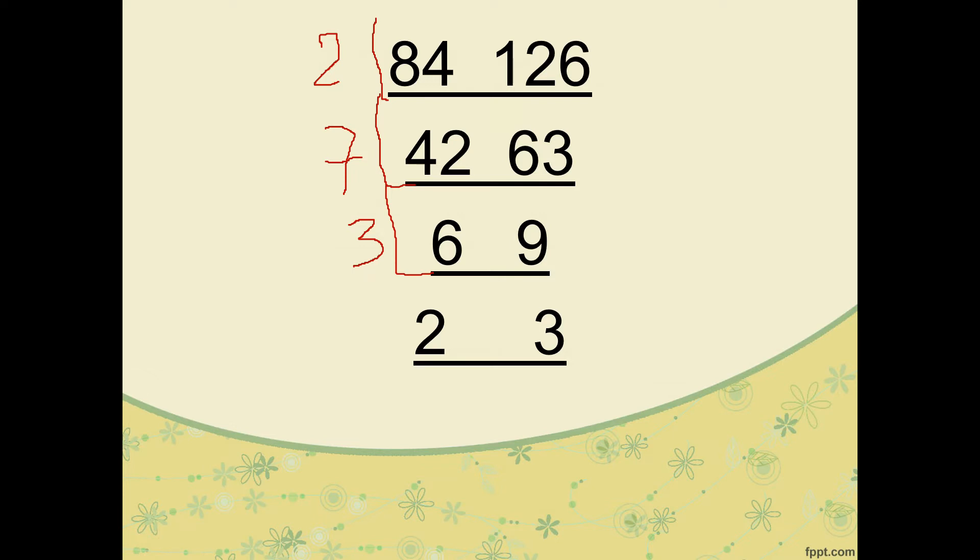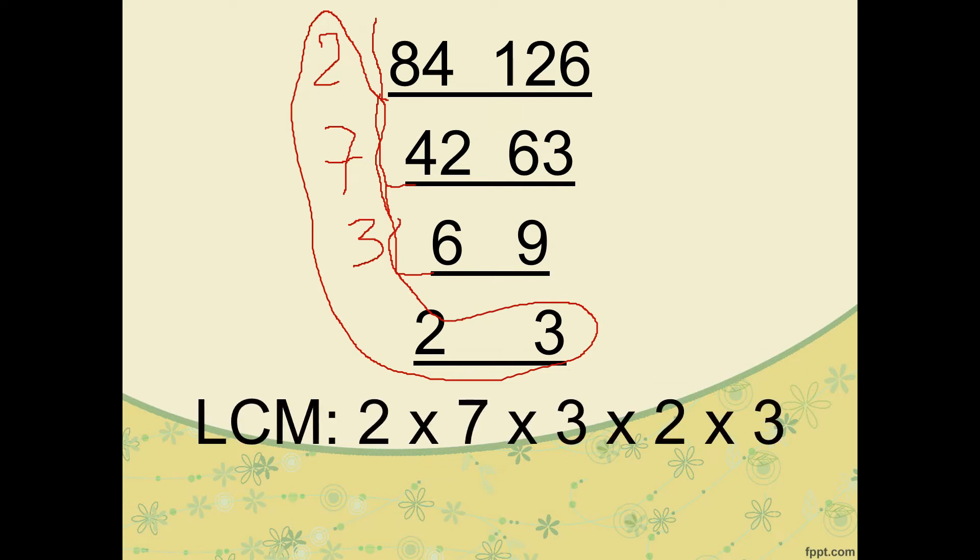2 and 3, do we have any number we can divide? No more, so we stop. We will find the LCM again. Let's take the L-shaped numbers. The LCM is 2 times 7 times 3 times 2 times 3, which equals 252.